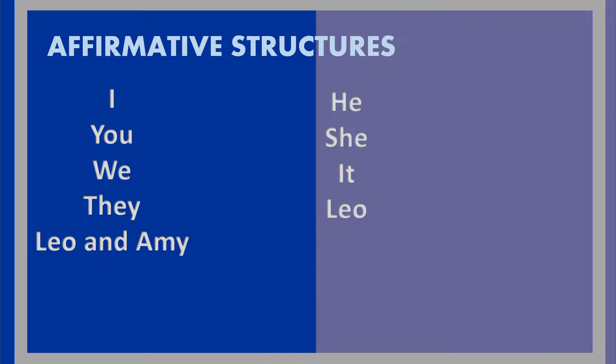Let's have a look at the affirmative structures. For the subject I, you, we, they, and plural nouns like Leo and Amy, plus bare verb. For he, she, it, and singular nouns like Leo, plus s or es verb.